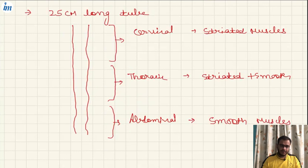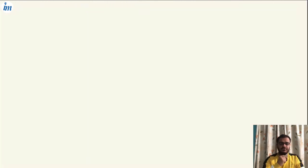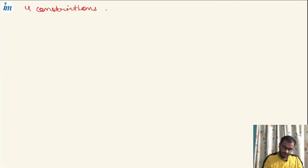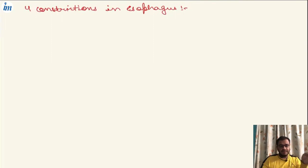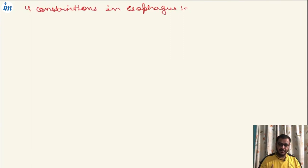This is the basic anatomy of the esophagus. Now we need to know about the constrictions — this is where questions are usually asked. According to radiologists and ENT specialists, some say there are three constrictions, some say five, but if we are talking about anatomy, we follow Gray's Anatomy. According to the latest edition of Gray's Anatomy, there are four constrictions in the esophagus.